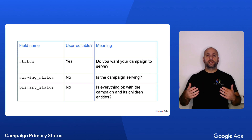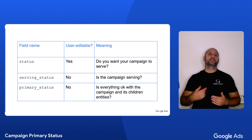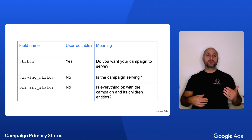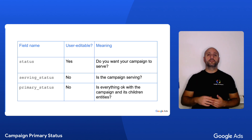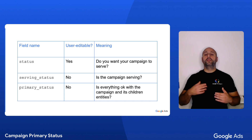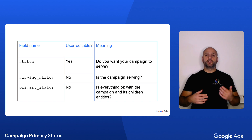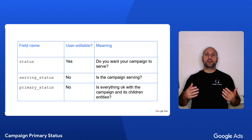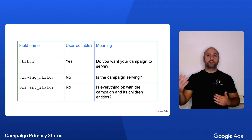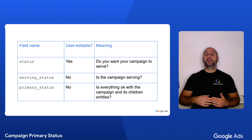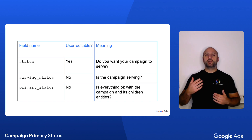It is also different from a campaign's serving status, since it gives you more details about the reasons why a campaign may not be serving. This is because a campaign's primary status is determined by aggregating several different signals belonging not just to the campaign itself, but also to the entities that belong to it — like its bidding strategy, its budget, its ad groups, and its ads.